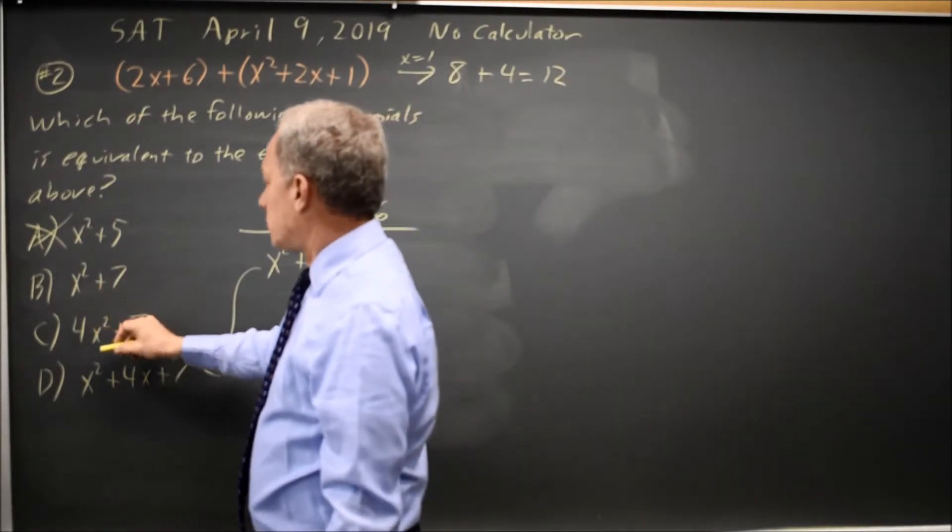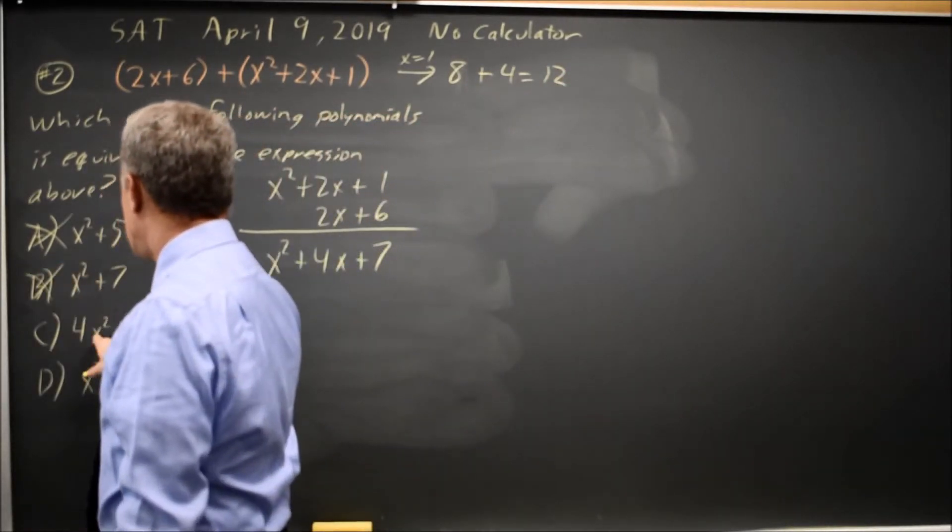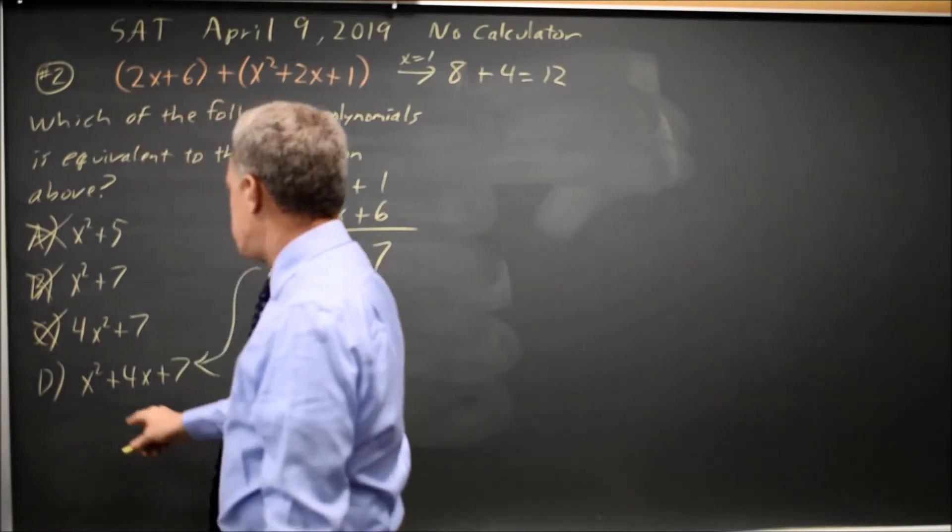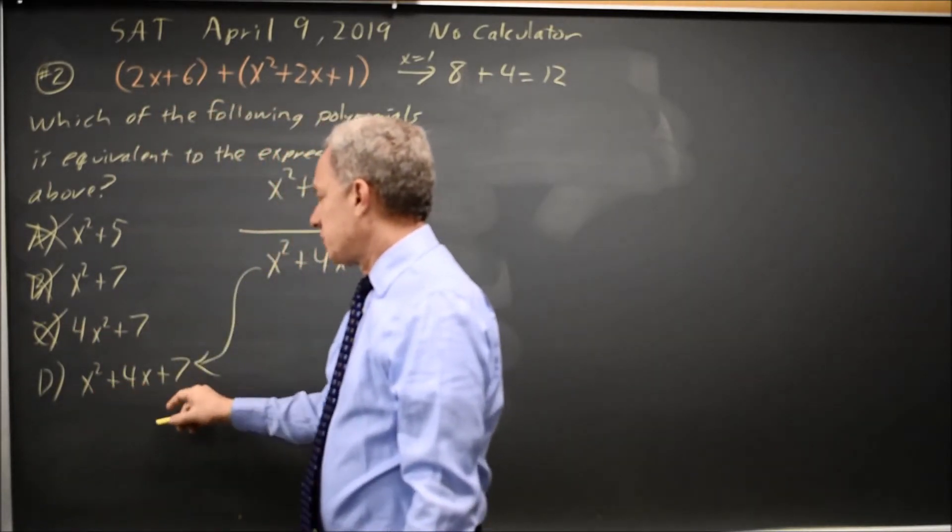This one is only 8. This is 11. And choice D is 1 plus 4 is 5 plus 7 is 12.